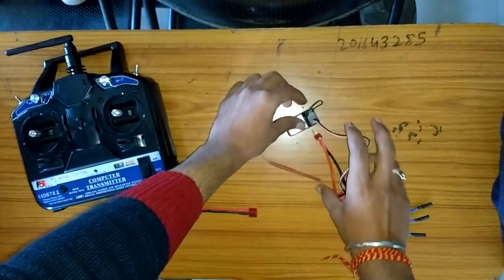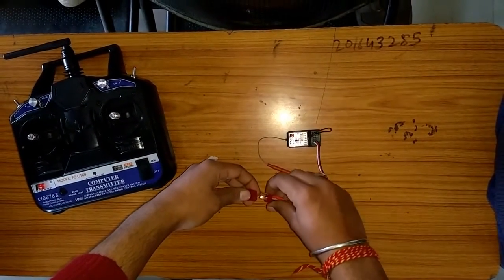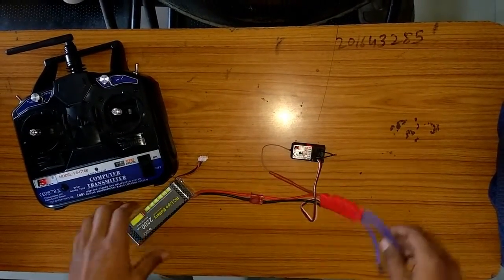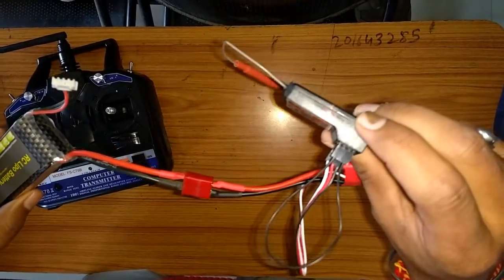After this, connect the 3S lipo battery to the electronic speed controller. Now you can see the red light on the receiver is flashing, which means the receiver is searching for the particular frequency to bind with.